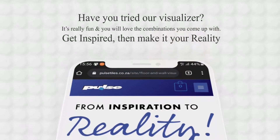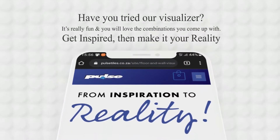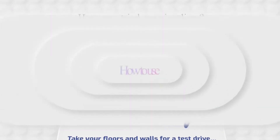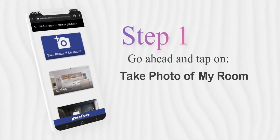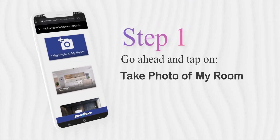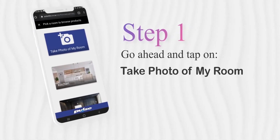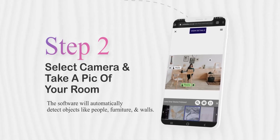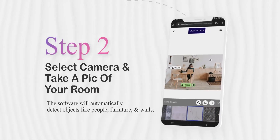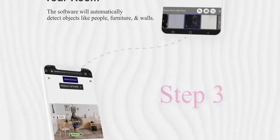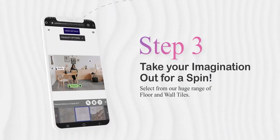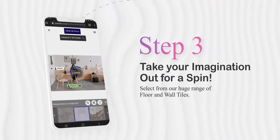Hi guys, have you tried our visualizer? It's real easy. Step one: tap on 'Take photo of my room.' Step two: select camera and take a pic of your room. Step three: take your imagination out for a spin.